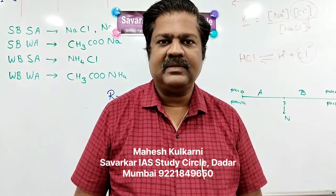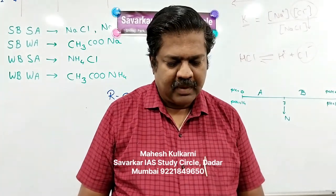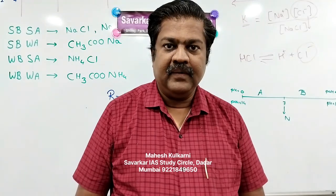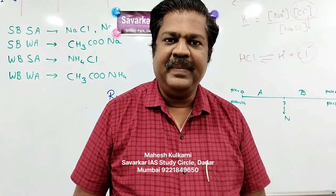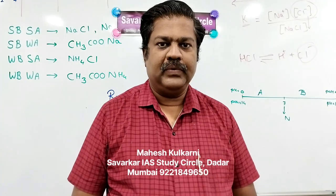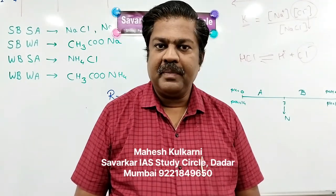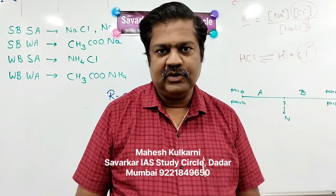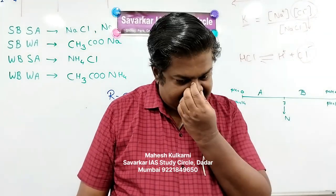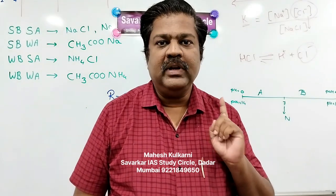Monosodium glutamate — we are using this as a food enhancer. And lastly riboflavin — it is again a B complex vitamin, specifically B2. So all four can be consumed, and many of us are consuming them. Therefore the answer is D, that is all 1, 2, 3, 4.